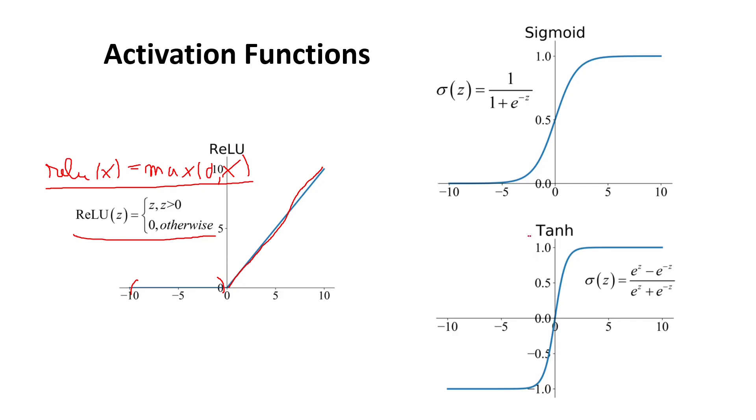And here on the bottom right we have the tanh function and what it does is take an input between minus infinity and plus infinity and map it to an output that is bounded between minus one and plus one. For values that are very negative, the output will tend towards minus one. For values that are very high and positive, the output will tend towards one. And here close to zero we have a quite steep increase from minus one to plus one.